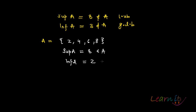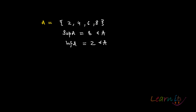The infimum would be two, which again belongs to A. Now let's take an example of a union of two sets. Let A equal the open interval (-1, 3) union with the closed interval [4, 8].